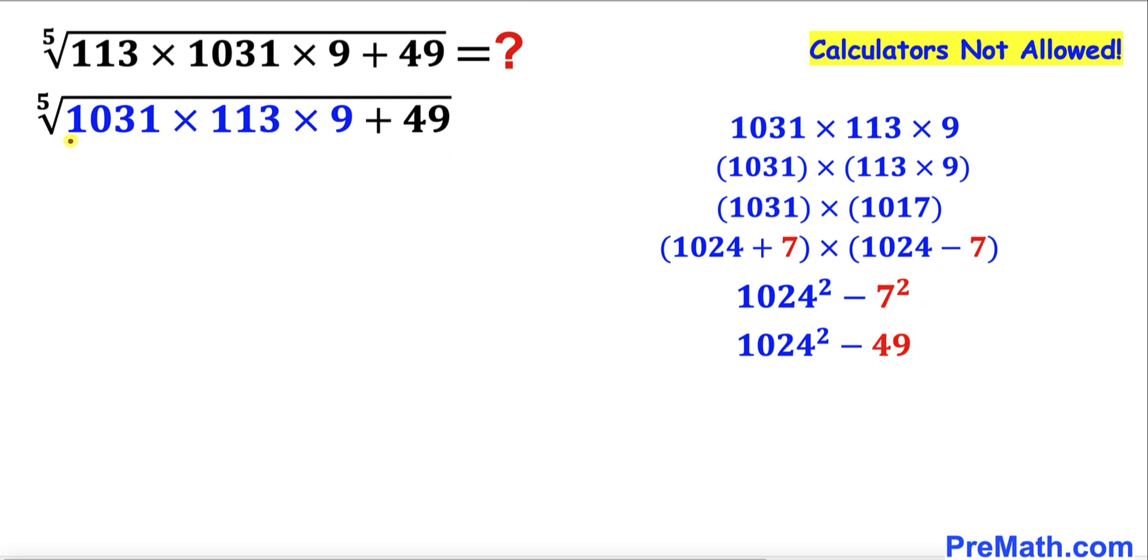Therefore I am going to replace this whole part by this simplified form. We can write the fifth root of this part as 1024 squared minus 49.